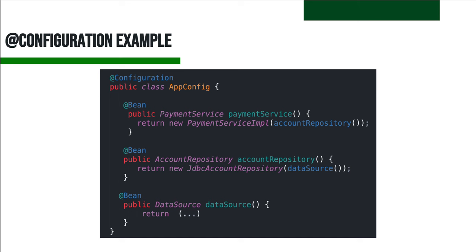For constructor injection, a class called DefaultPaymentService contains a final AccountRepository, and the constructor accepts an AccountRepository parameter — Spring will automatically inject the AccountRepository bean. Similarly, a JdbcAccountRepository implements AccountRepository, has a final DataSource field, and its constructor accepts a DataSource parameter — Spring automatically injects it via constructor.